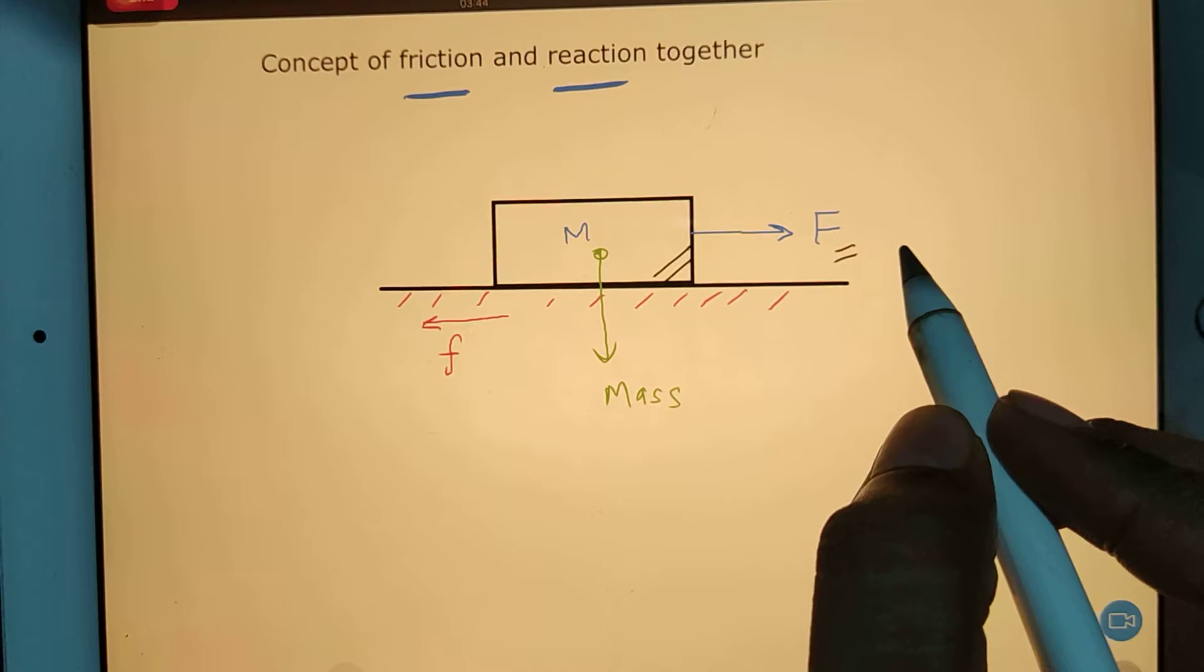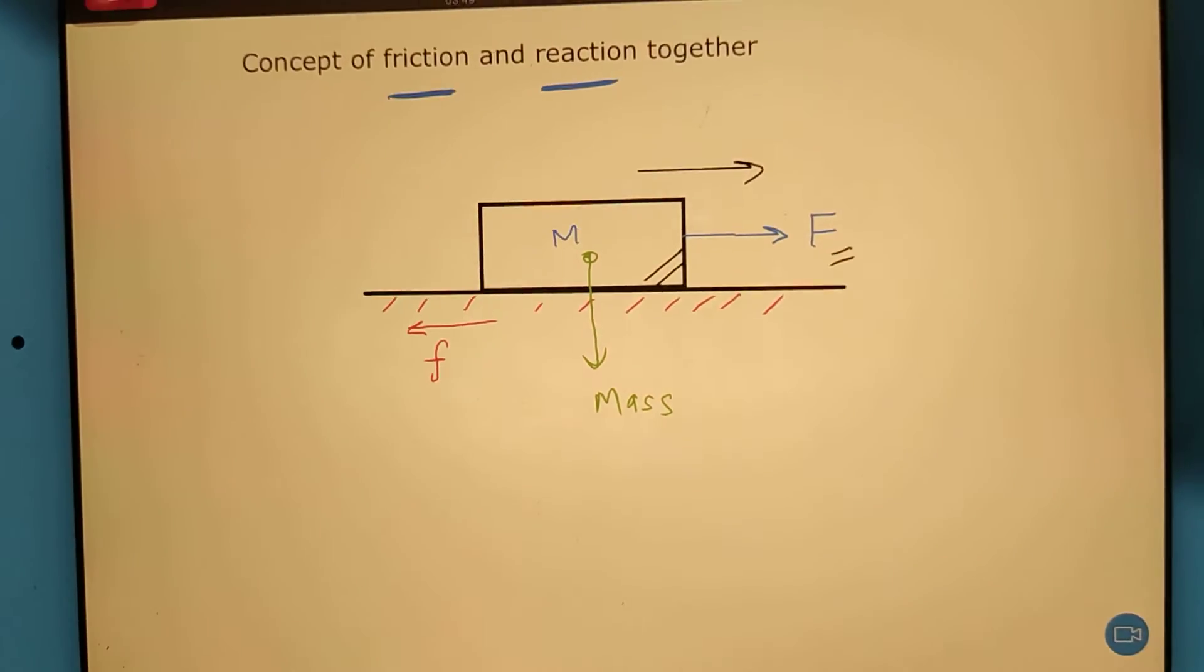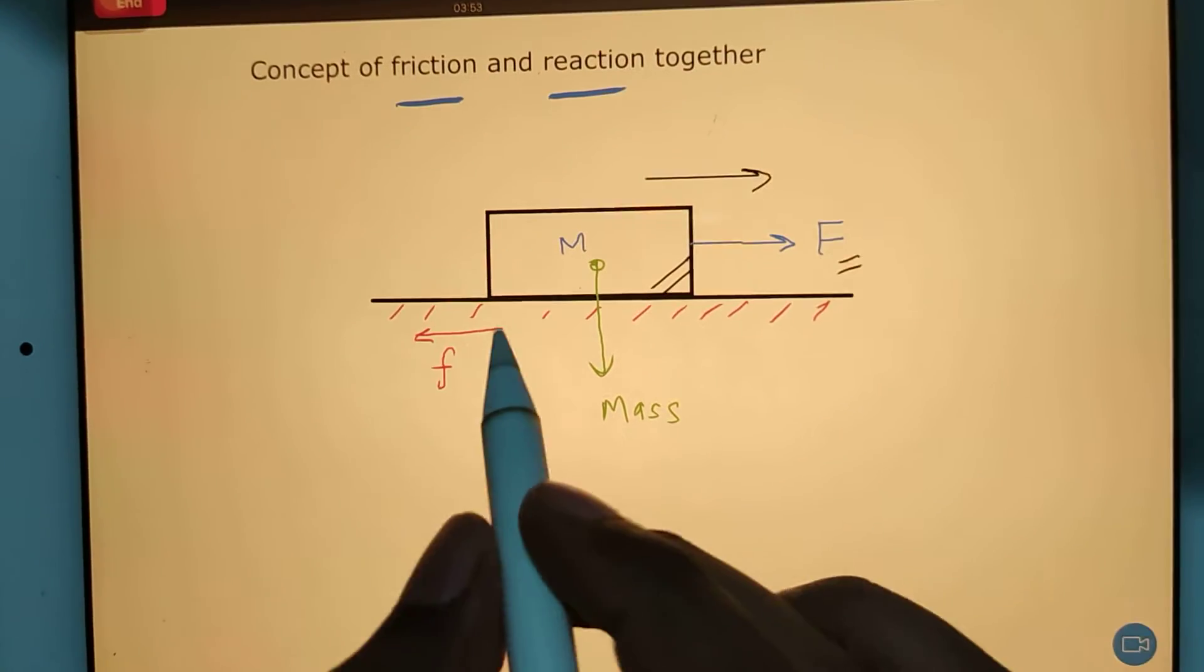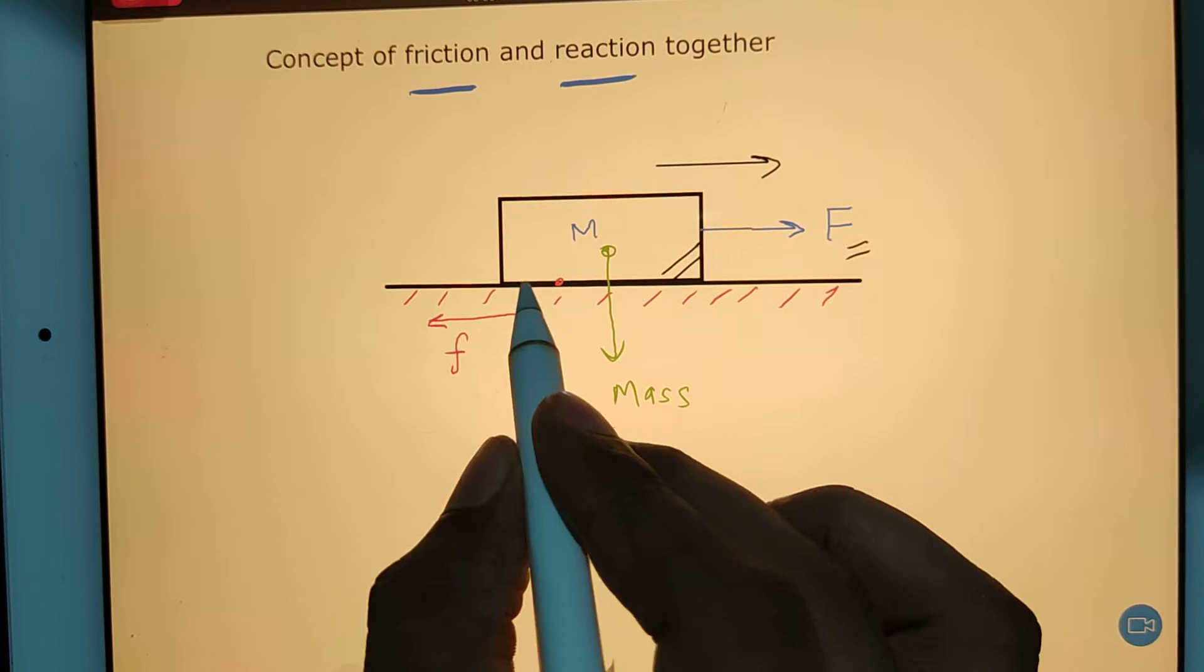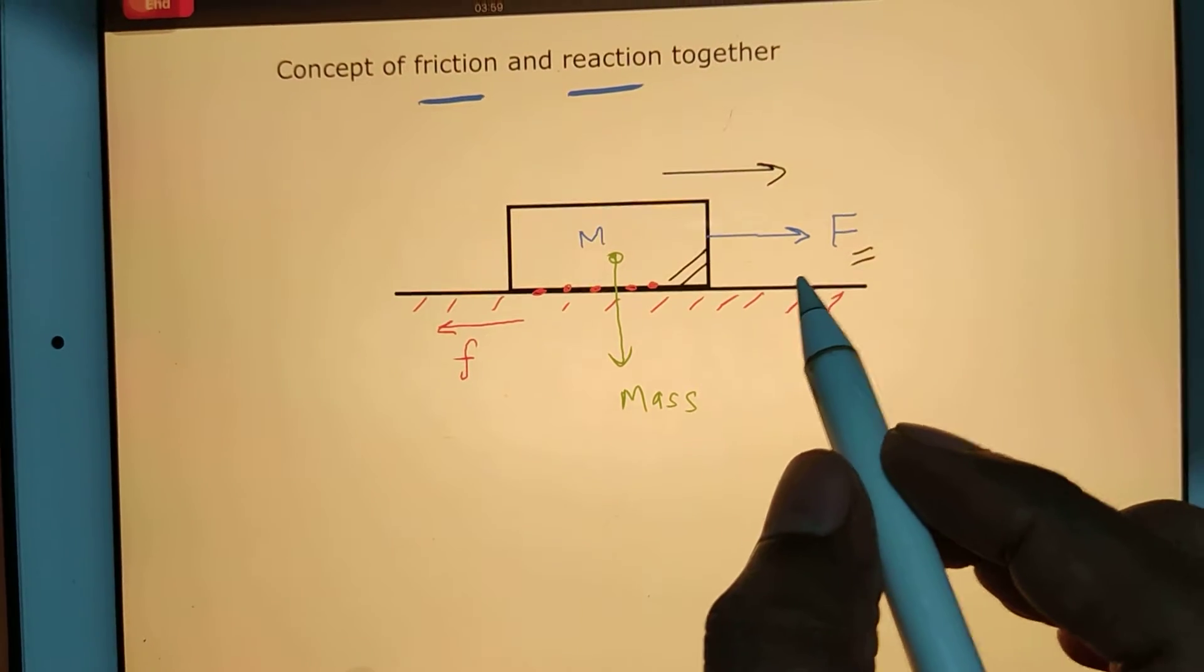Between both surfaces, like the bottom surface of the block and the top surface of the road, there will be molecular attraction. Because of that, we will have a friction force in this direction.